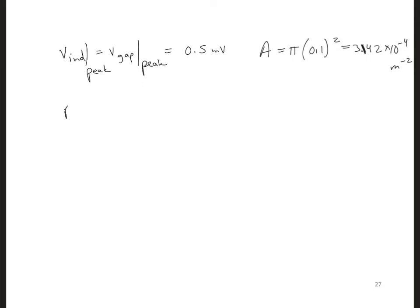We can now also use the constitutive relation that B is equal to mu H, where mu is 4 pi times 10 to the minus 7. So, now we have everything we need to solve for H. H, H naught, the peak, is V gap peak over mu naught A omega, because the peak of the sinusoid, yeah, sine of what we got, will also be equal to 1. So, what we end up with here is 0.22 milliamps per meter.